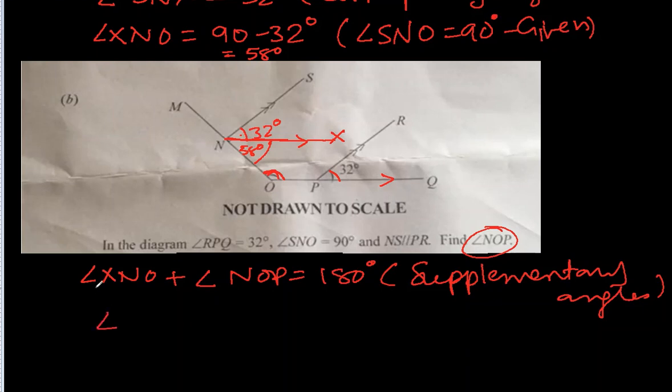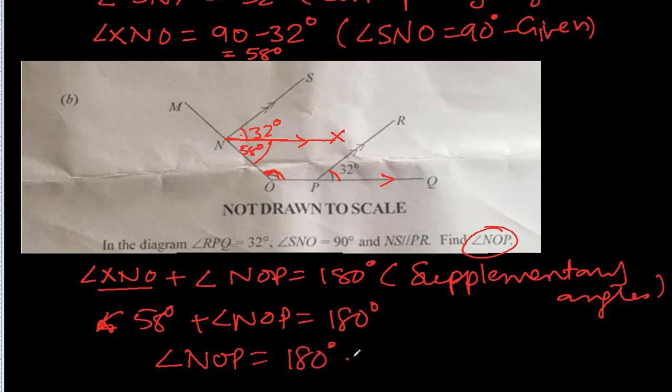All right. So angle XNO is known to us. It is how much? 58. So it will be, let's write this value, 58 degrees plus angle NOP equal to 180 degrees. Angle NOP will be 180 minus 58 degrees, which will be 122 degrees. And thus, that's the answer.